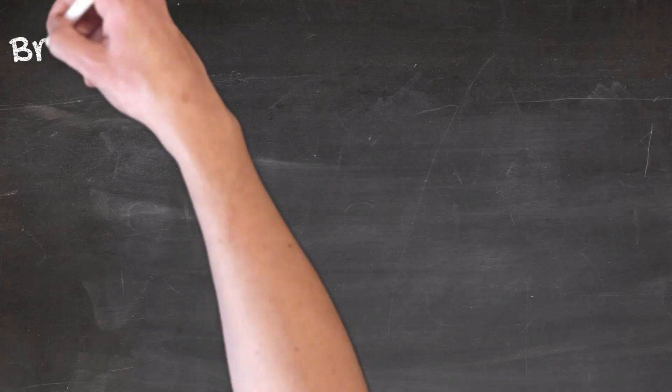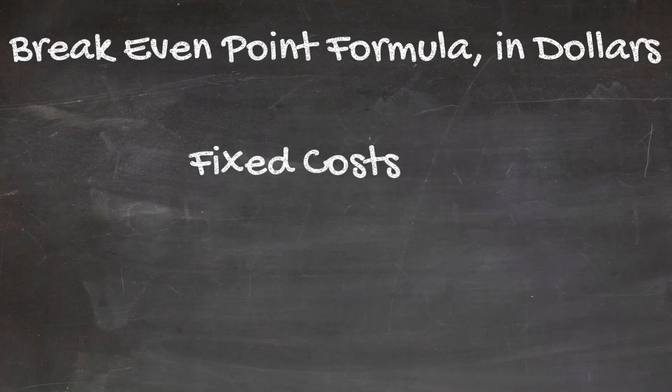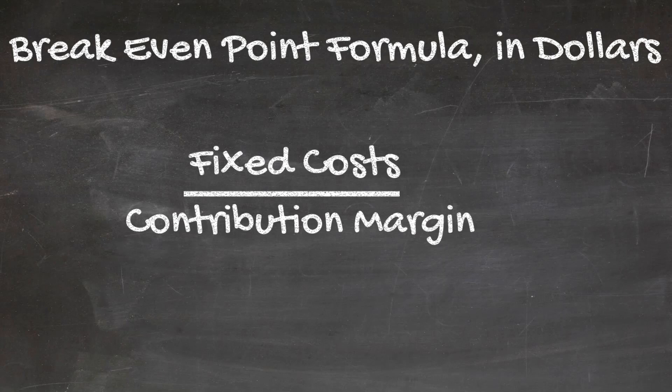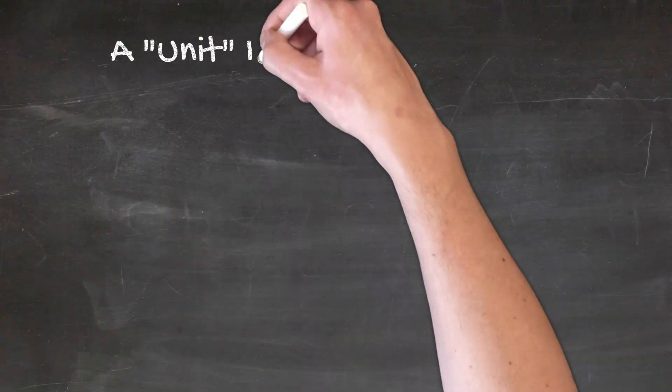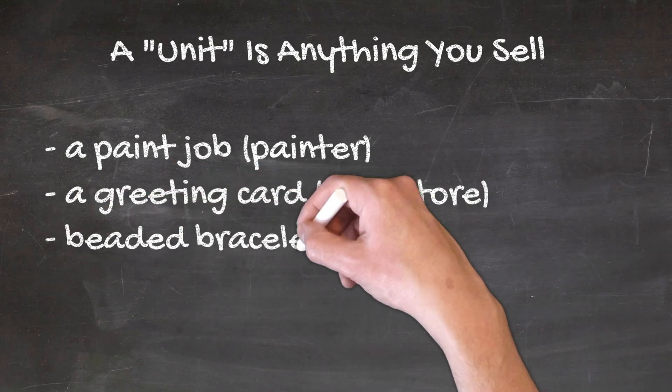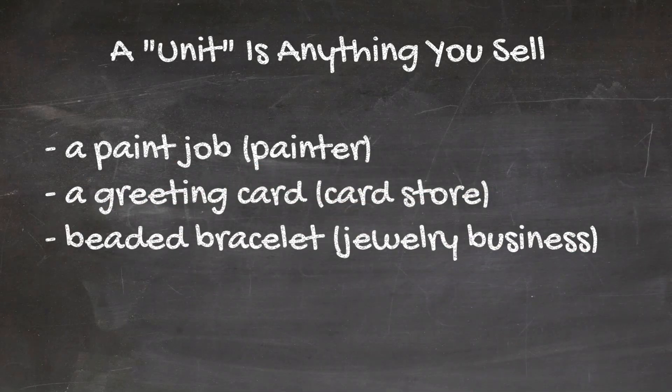Let's start off by looking at the breakeven point formula in sales dollars. The formula is quite simple: all of your fixed costs on the numerator, divided by your contribution margin from your product or service in the denominator. Contribution margin just means how profitable each unit that you sell is as a percentage of the overall revenue number. A unit can be a job if you're a painter, a card if you're a card store, or a beaded bracelet if you make jewelry.